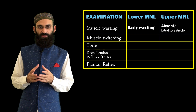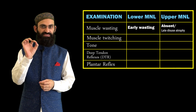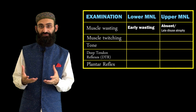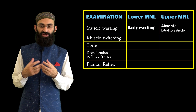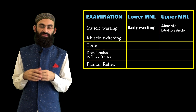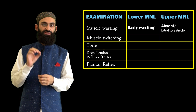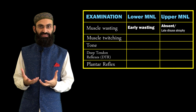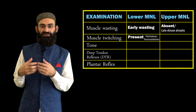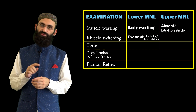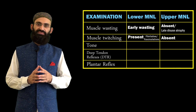In lower motor neuron weakness, denervated muscles become hyperexcitable. Spontaneous discharge from a single myofibril can be detected by electromyography as fibrillations, which are not visible to the naked eye. However, spontaneous contraction of an entire motor unit — consisting of about 100 to 200 myofibrils innervated by a single neuron — results in visible twitching called fasciculations. Fibrillations on EMG and fasciculations visible to the naked eye are features of lower motor neuron weakness, not upper motor neuron weakness.